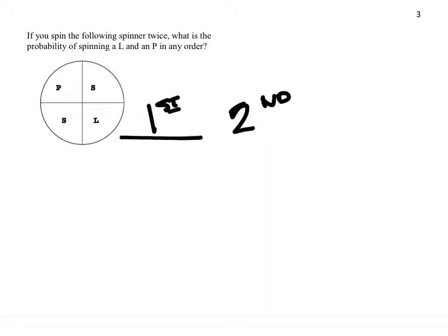So on the first spin, the possible outcomes are P, S, S, and an L. So we do have two S's right here, and that's okay.